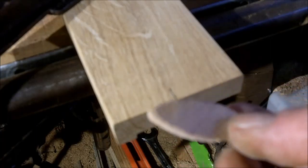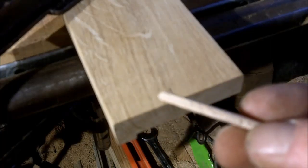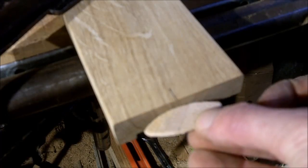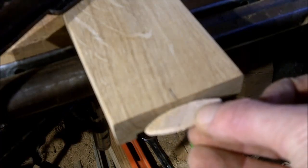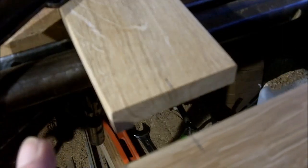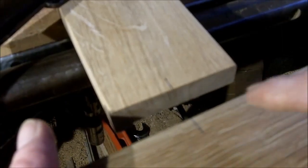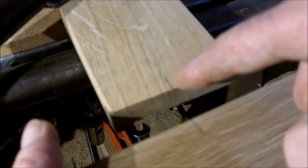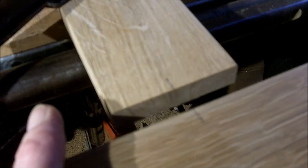Here we see a biscuit. It's a little piece of wood. It's going to fit in a slot in the end of one of the rails. I'm going to cut the slot exactly in line with both of these marks.